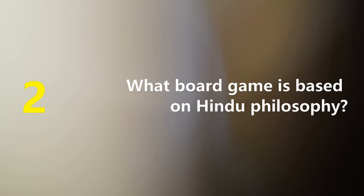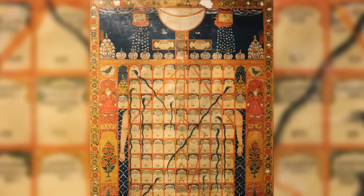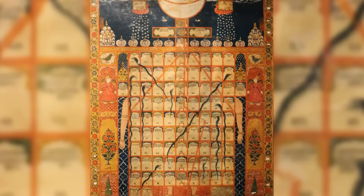Now for our next question: what board game is based on Hindu philosophy? Snakes and Ladders, also known as Chutes and Ladders in the United States, traces its origins to a family of historic Indian dice board games. This timeless game was immensely popular in ancient India and deeply intertwined with traditional Hindu philosophy. It served as an educational tool for illustrating the consequences of one's actions, whether virtuous or vice-ridden. The game board itself was adorned with symbolic imagery featuring gods, celestial beings, animals and botanical motifs.